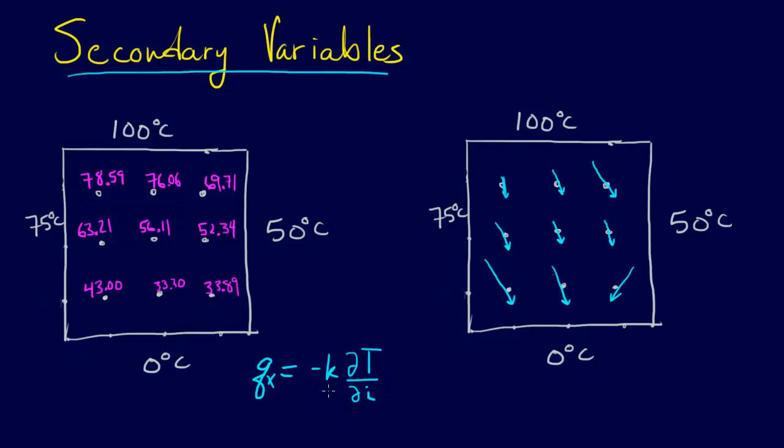So in this case, we can just use a finite difference approximation. So if we're worrying about X, then QX is equal to minus K, I'm sorry, this is K prime. And then our approximation for the derivative, so the centered finite difference, then we have T I plus 1 J minus T I minus 1 J all over 2 delta X.